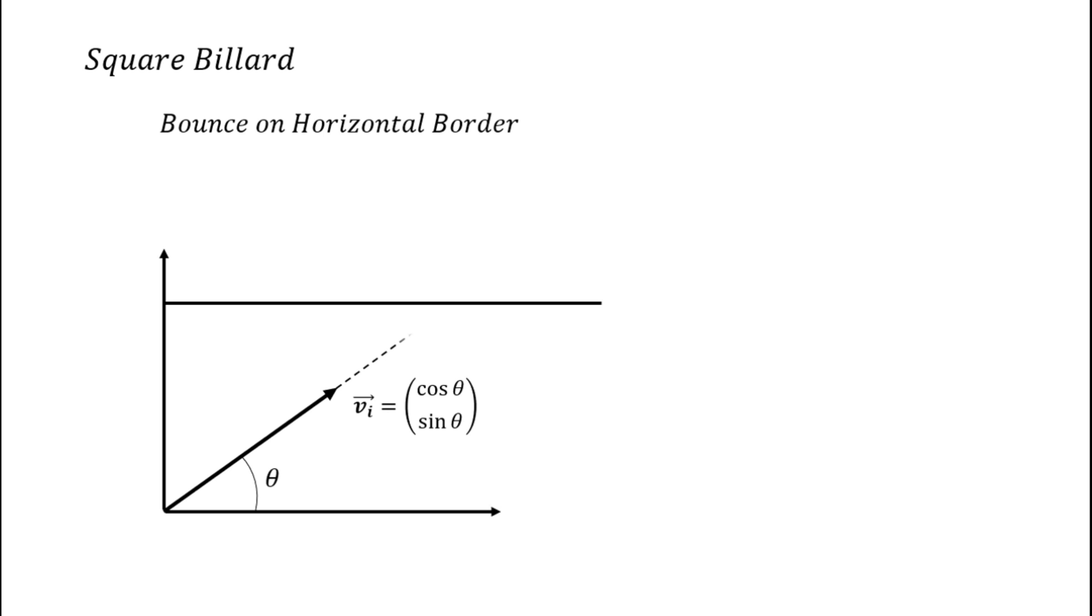Let's see now the horizontal border. We still have the same vector vi, the horizontal border with the specular reflection property. But this time it's even easier. This gives us directly the orientation of the reflected vector minus theta, and the coordinates are cos theta and minus sin theta.